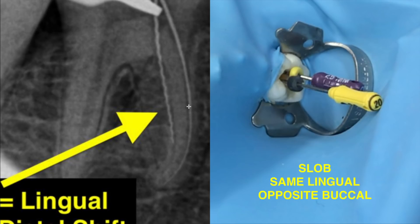In a crisis when you're forgetting which is what — mesial, distal, up, down, left, right, front, back — just use a different file. We know that we placed the Hedstrom file in our lingual canal, so right away, immediately, okay, my lingual canal is short by, let's say two, two and a half millimeters, and my buccal canal is pretty much right on the money.